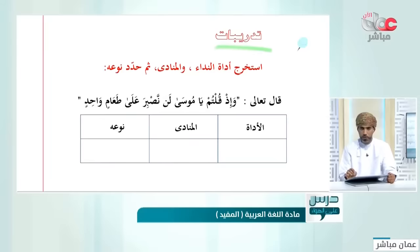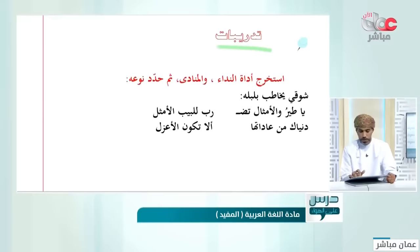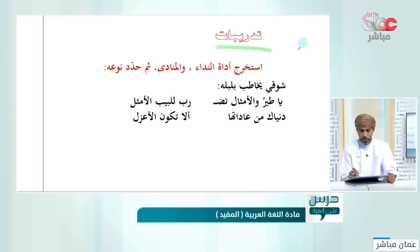قال تعالى: وإذ قلتم يا موسى لن نصبر على طعام واحد. مثال سهل: الأداة 'يا' والمنادى 'موسى'، ونوعه علم مفرد.